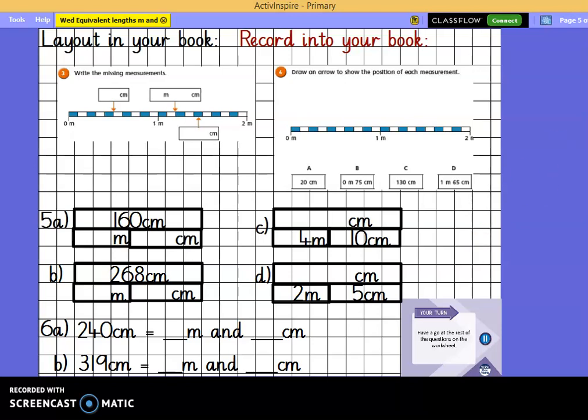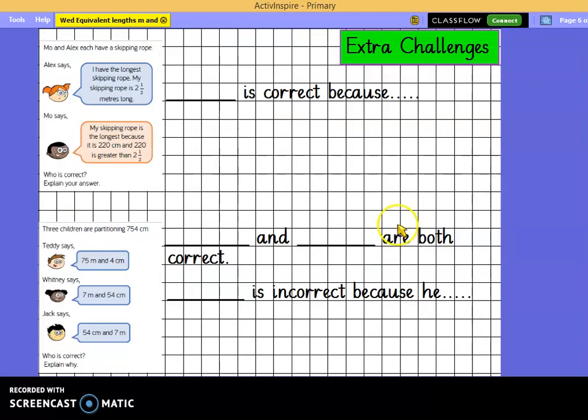For some additional challenges, here they are. You'll find these in your pack. Mo and Alex each have a skipping rope. Alex says, I've got the longest skipping rope. My skipping rope is 2 and a half metres long. Mo says, my skipping rope is longer because it's 220 centimetres. And 220 is greater than 2 and a half. But who is correct and why? Use your learning from today to help you.